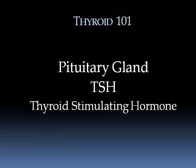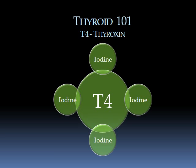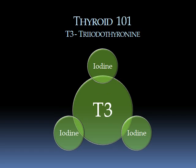Let's start with thyroid 101, a little review of the biochemistry and physiology — very simple. The pituitary gland in the brain makes a hormone called TSH, or thyroid stimulating hormone. It stimulates the thyroid to make its hormones. The thyroid responds to TSH by producing and secreting primarily two hormones: T4 and T3. T4, or thyroxin, is a hormone with four iodine atoms attached to it. It is not the active thyroid hormone — it must be converted to the active thyroid hormone called T3, which has three iodine atoms. T3 is the active thyroid hormone that controls all of the metabolism of the body.